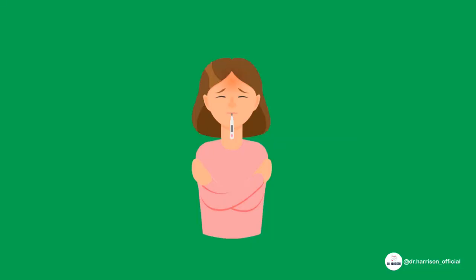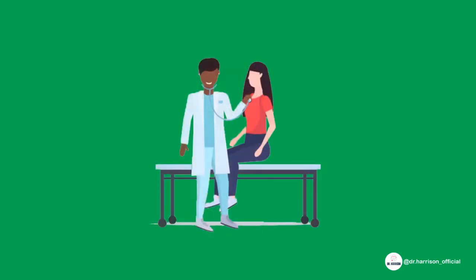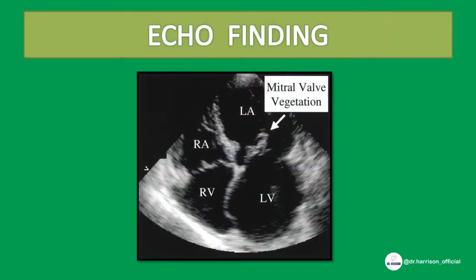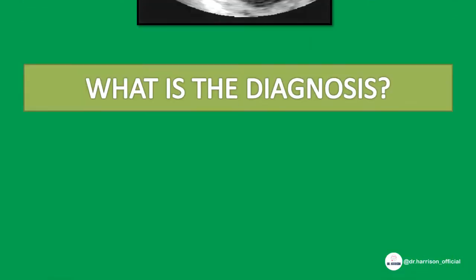Hello everyone, welcome to today's video. A 40-year-old woman comes to the OPD with fever with chills and rigors. On examination she looks pale and has clubbing of fingers. Auscultation revealed a mid-diastolic murmur. Cardiac echo was taken and it showed the following finding. What is the diagnosis?